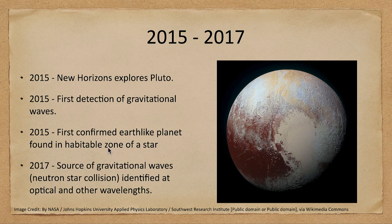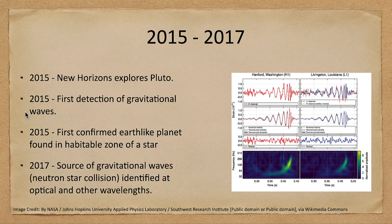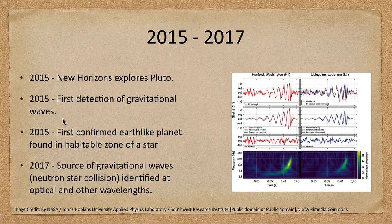We had the exploration of Pluto by the New Horizons spacecraft, giving us detailed images of the distant dwarf planet that are still being studied. Also in 2015, we had the very first detection of gravitational waves from two coalescing black holes. Gravitational waves occur when any object with mass moves, but are strongest with very high-mass, fast-moving objects. The first confirmed detection came in 2015, nearly 100 years after they were predicted by Einstein in his general theory of relativity.